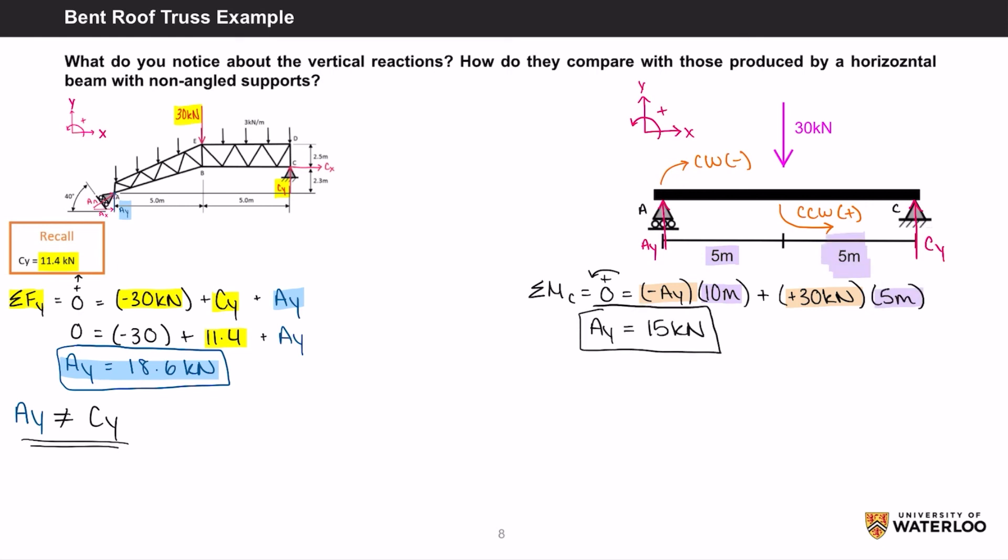Using the equilibrium equation, we can see that the net force in the y direction is equal to zero, which is equal to AY subtract 30 kN plus CY. Substituting in 15 kN for AY, you get CY equals 15 kN.